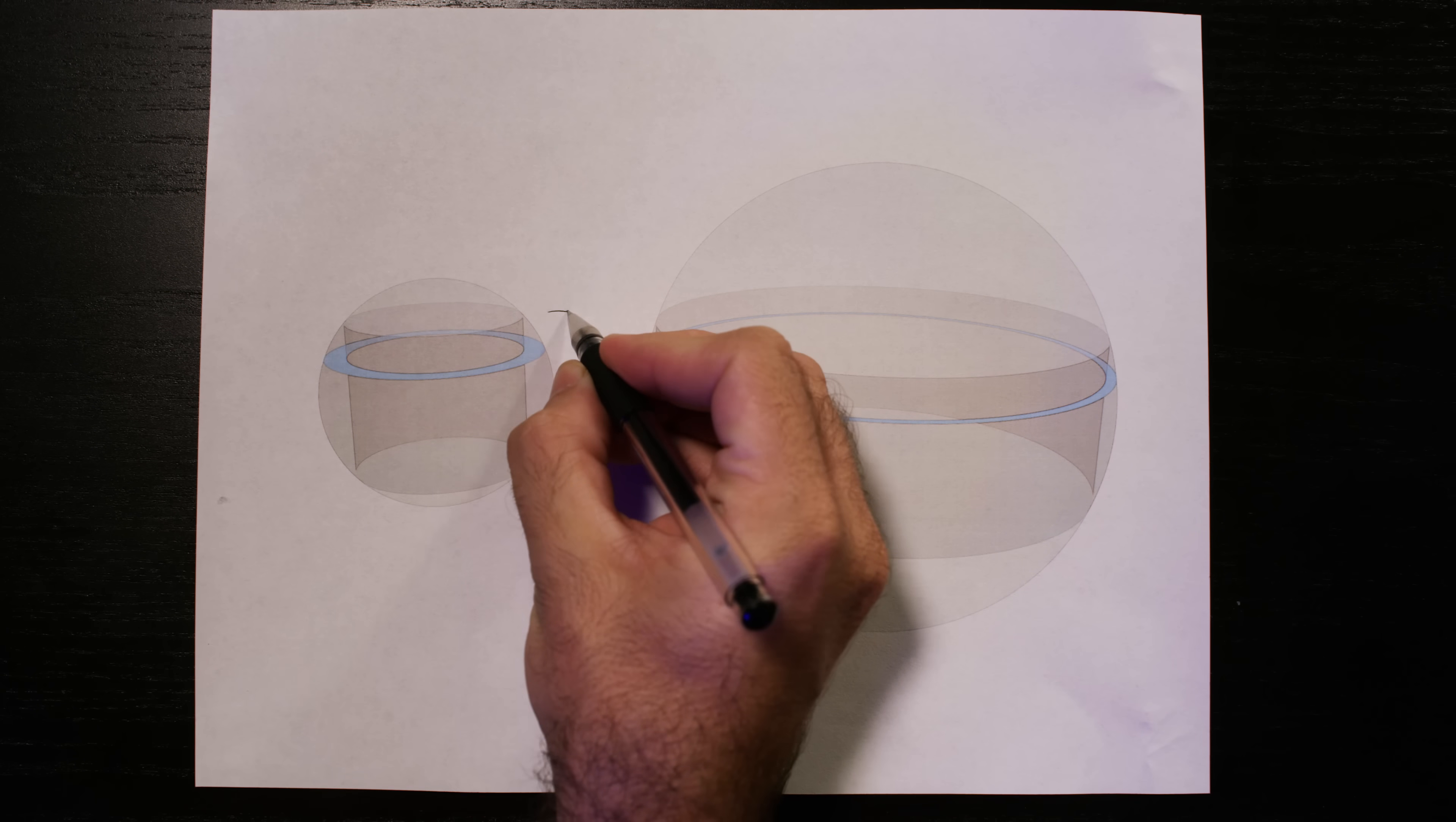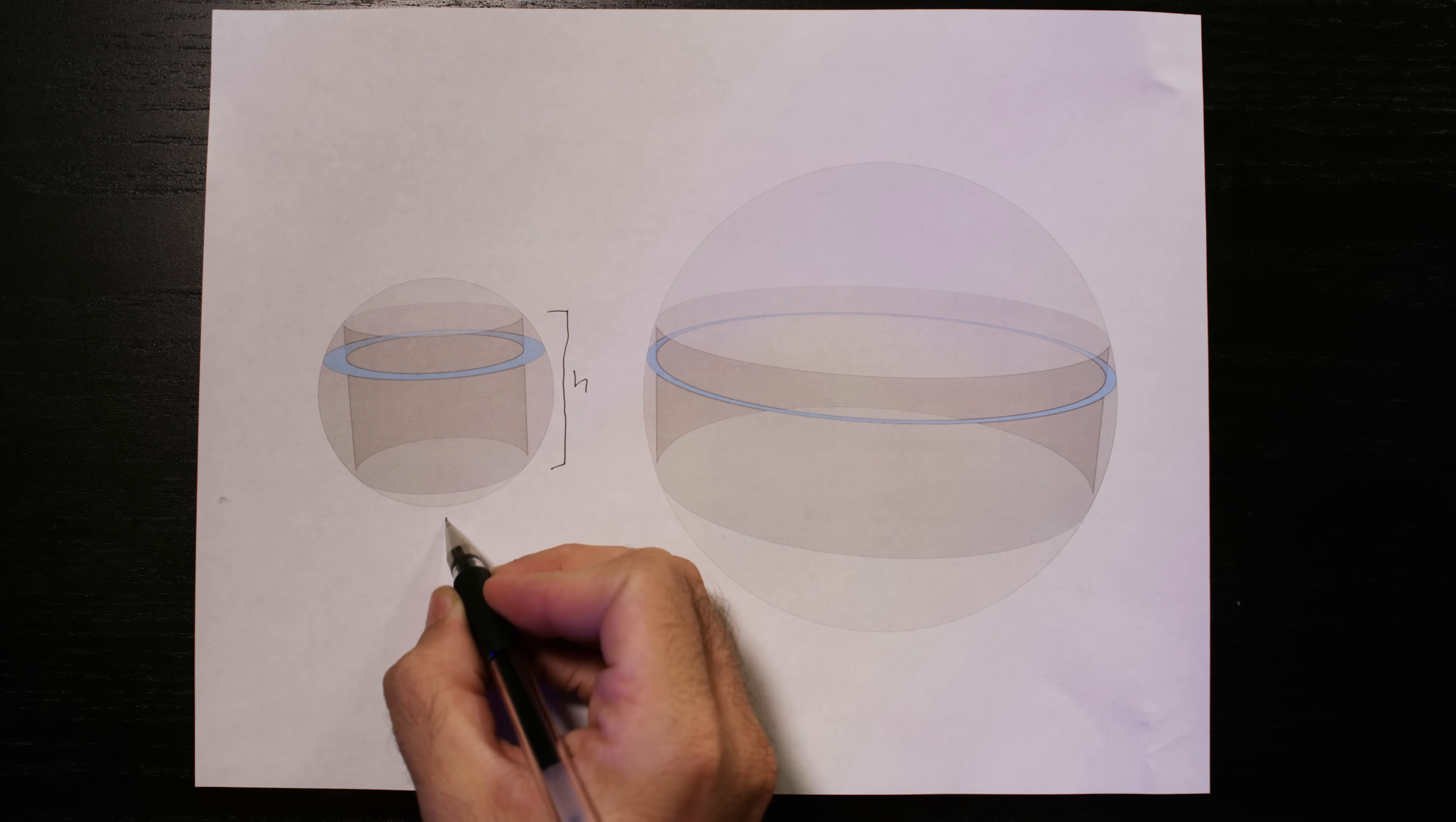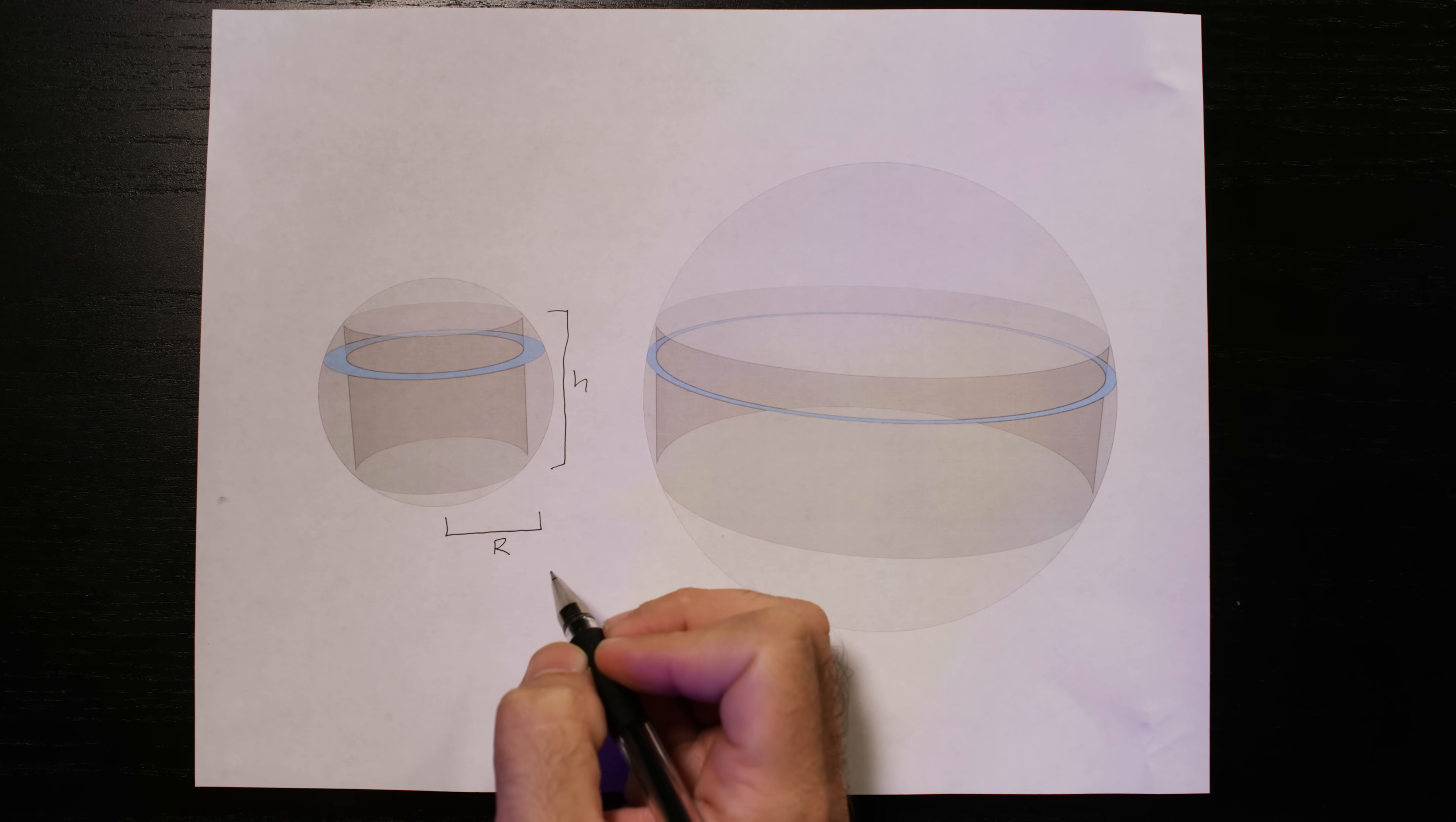First of all, let's call the height of the napkin ring H, and the radius of the sphere they're cut from, capital R. Alright, perfect.